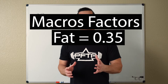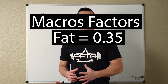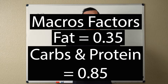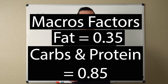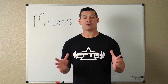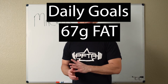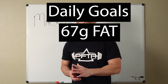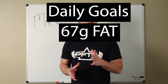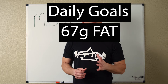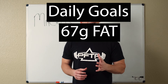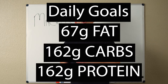For fat, multiply your goal weight by 0.35. For protein and carbs, multiply by 0.85. So if I do 190 times 0.35, I get 67 grams of fat. When I do 190 times 0.85, I get 162 grams of carbohydrates and protein.